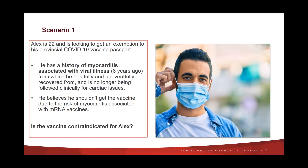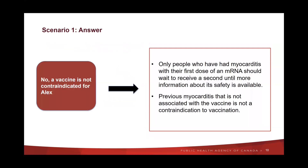Now for the scenario-based portion of our webinar. Alex is 22 and is looking to get an exemption to his provincial COVID-19 vaccine passport. He has a history of myocarditis associated with a viral illness that he contracted about six years ago. He fully and uneventfully recovered from that illness, and he's no longer being followed for cardiac issues. He believes he shouldn't get the vaccine due to the risk of myocarditis associated with mRNA vaccines. Is the vaccine contraindicated for Alex? No, a vaccine is not contraindicated for Alex. People who have had myocarditis with their first dose of an mRNA vaccine should wait to receive a second until more information about safety is available. However, previous myocarditis that is not associated with the vaccine is not a contraindication to vaccination.